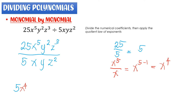Next we simplify y squared divided by y. Same case — this is case number 1 for the quotient law of exponents. Copy the base, subtract the exponent: 2 minus 1. The exponent of y is 1, so we write this simply as y.